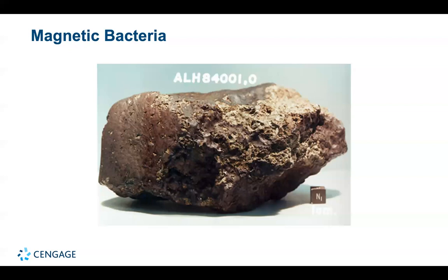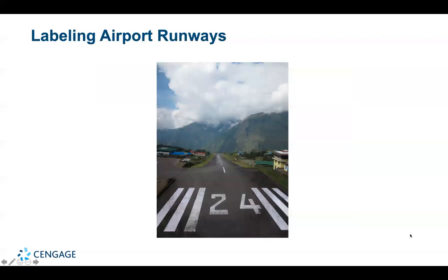In 2001, a meteorite originating on Mars was found to contain a chain of magnetite — NASA scientists believe it may be a fossil of ancient Martian bacterial life. Earth's magnetic field is also used to label runways at airports. A large number is painted on the end of the runway — the number describes the direction the airplane is traveling, expressed as a magnetic heading in degrees measured clockwise from magnetic north, divided by 10. A runway marked 9 is directed toward east (90 degrees ÷ 10); a runway marked 18 is directed toward magnetic south.